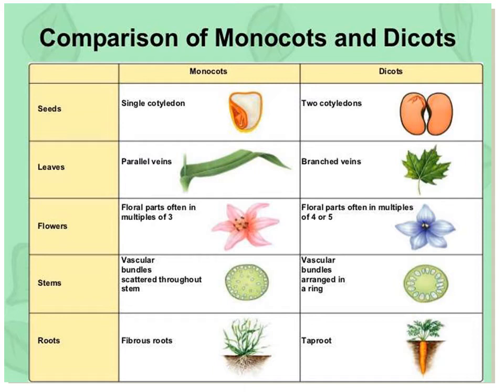Students often confuse how to identify monocot and dicot plants, but there are certain criteria. Leaves are very important to identify whether plants are monocot or dicot. In the case of monocots, you will find parallel venation, but in the case of dicots you will see branched veins.